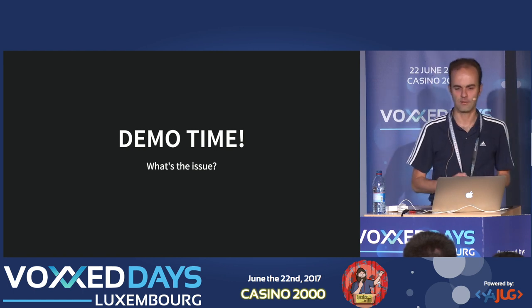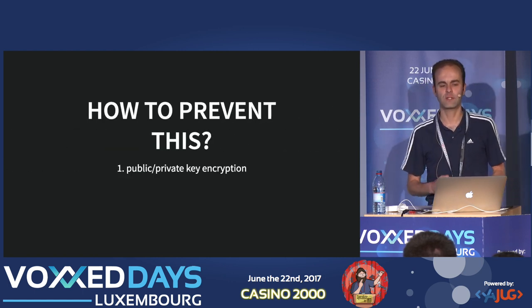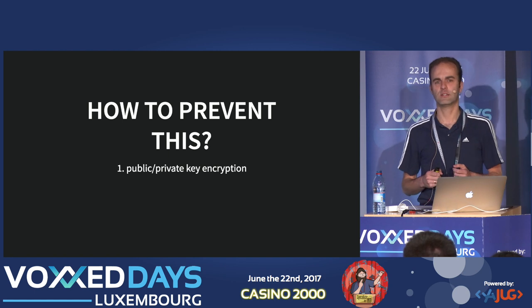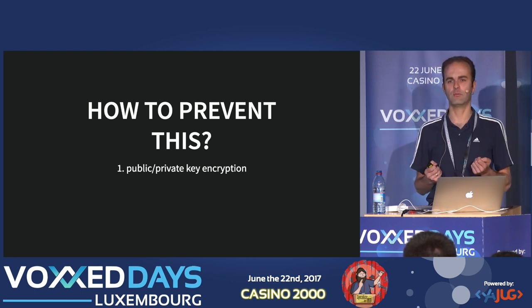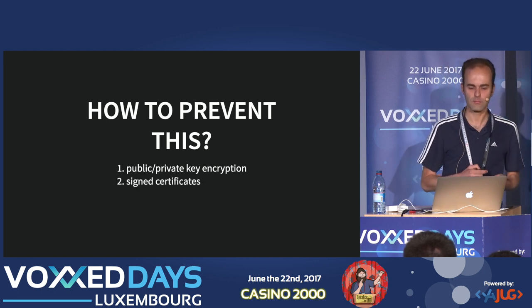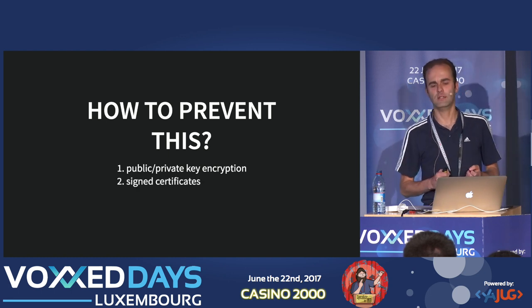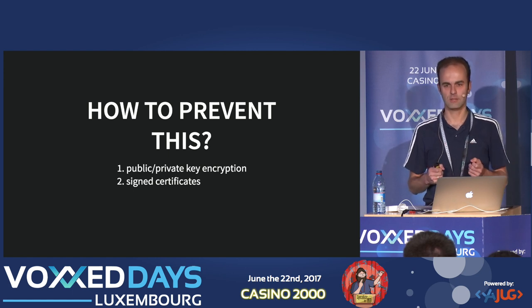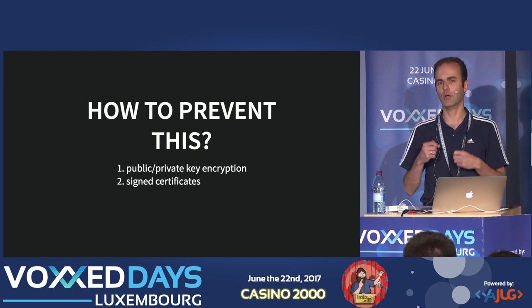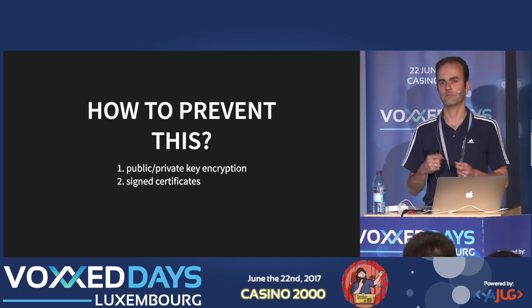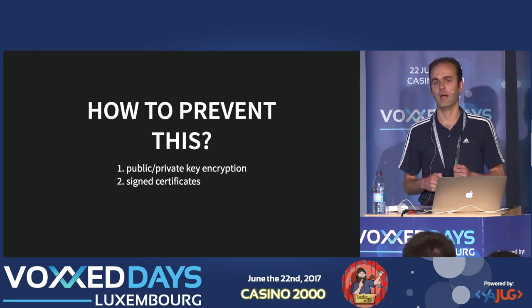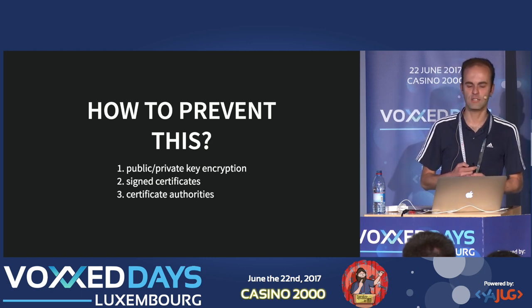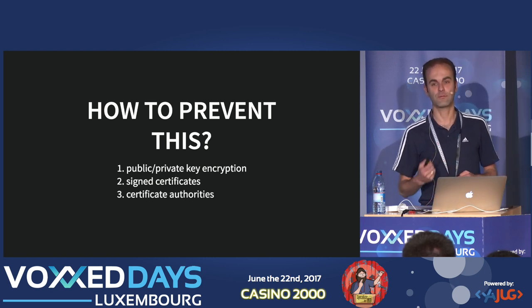The first thing that we need to prevent that is a mechanism to encrypt data. And we'll be looking at public-private key encryption this morning. The second thing that we need is something to establish this trust relationship and knowing that we can use a certain combination of public and private keys. And we do that using signed certificates. And to be able to use signed certificates, we need something else, and that's certificate authorities.